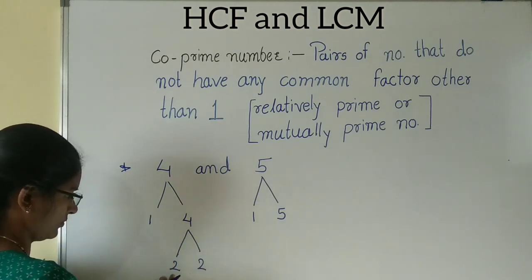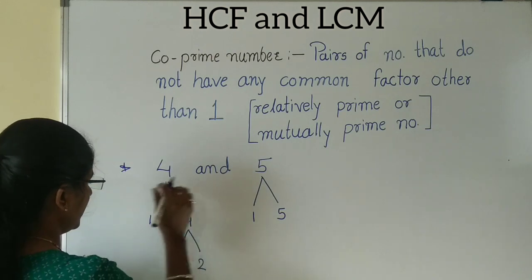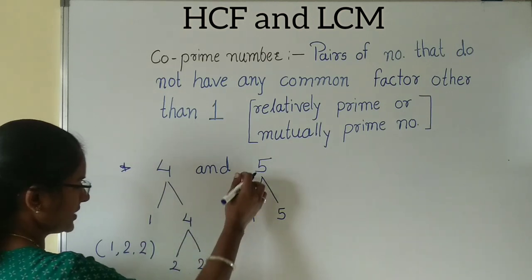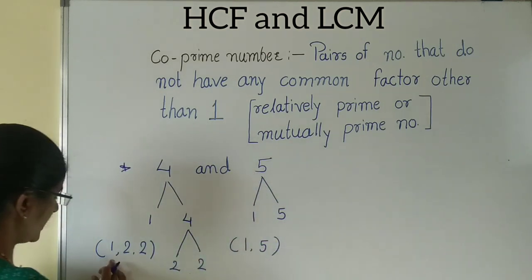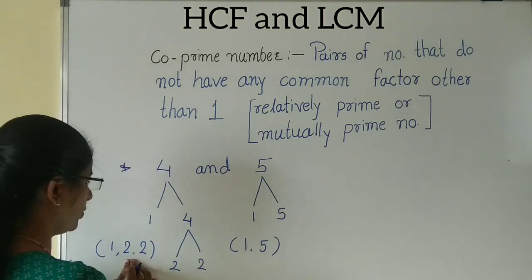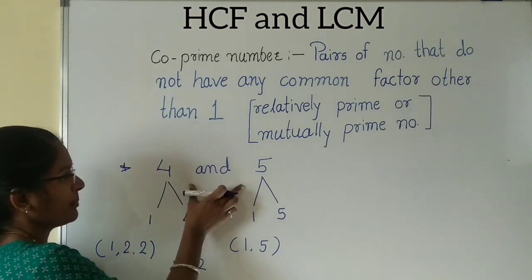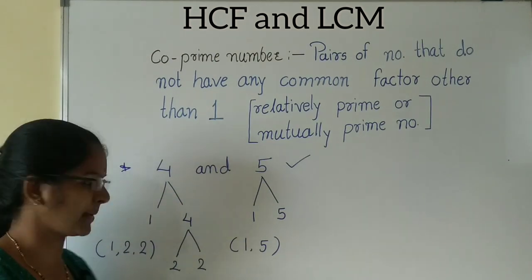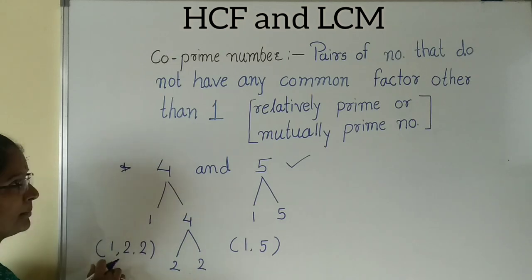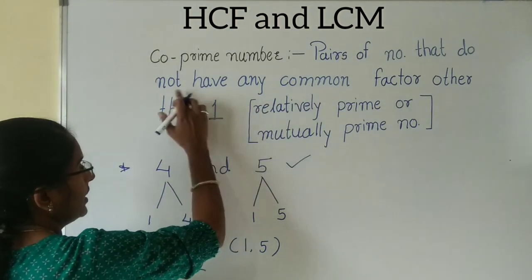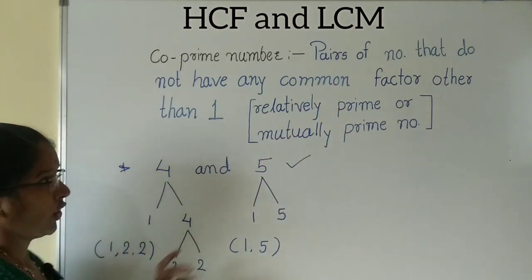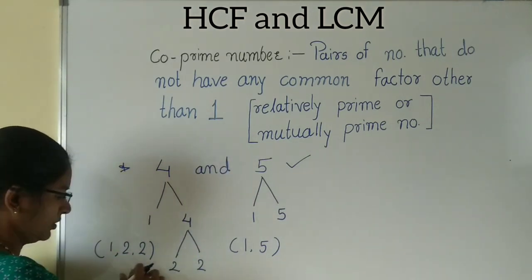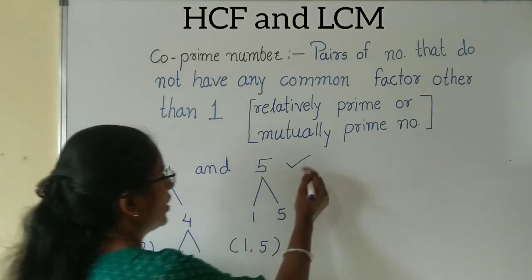So, 4's factors are 1, 2, and 4. And 5's factors are 1 and 5. Here, 1 is common. But 2 is not in 5's factors, and 5 is not in 4's factors. Means these two numbers are co-prime numbers. Why? Because there is only 1 as the common factor — not any other factor in common. That's why it's called a co-prime number.